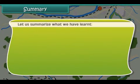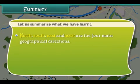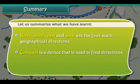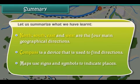Summary. Let us summarize what we have learned. North, South, East and West are the four main geographical directions. A compass is a device that is used to find directions. Maps use signs and symbols to indicate places.